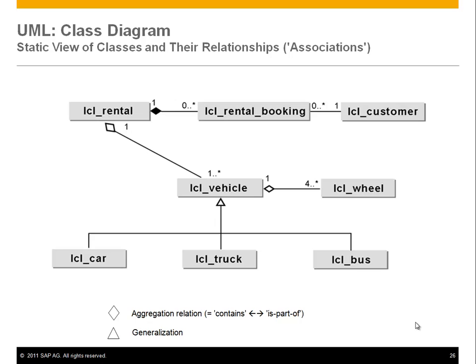The next symbol is the generalization or triangle, kind of like an arrow going up. This is used in object orientation to denote implementing interfaces or class inheritance, which we'll come to later. In this diagram you can see that vehicle is a generalization of car, truck, and bus. The bus, truck, and car classes can do different things in addition to what the vehicle can do, and you denote this in a class diagram this way.